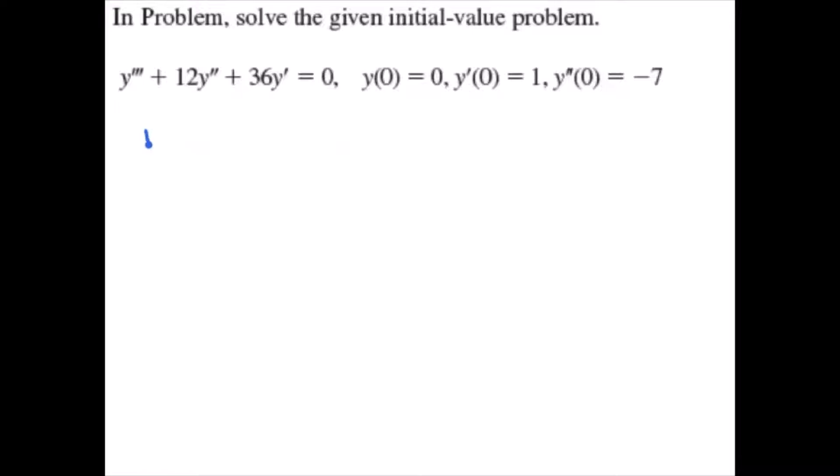We start with the characteristic equation m³ + 12m² + 36m = 0. We immediately pull an m out of that, and then we can factor the rest as (m + 6)². So that gives us three roots: 0, -6, and -6.